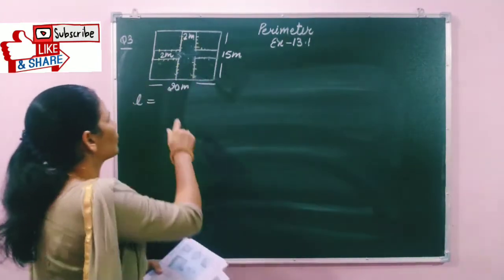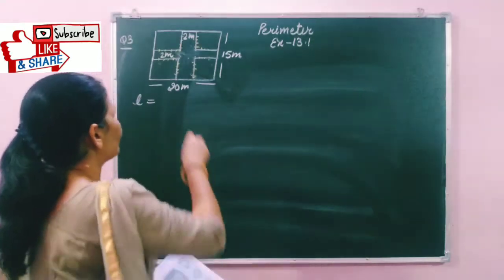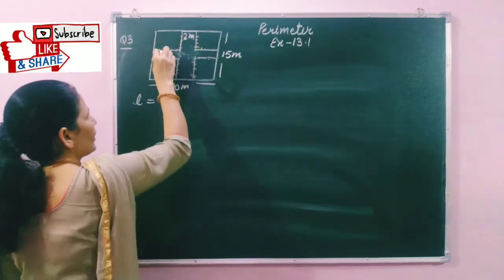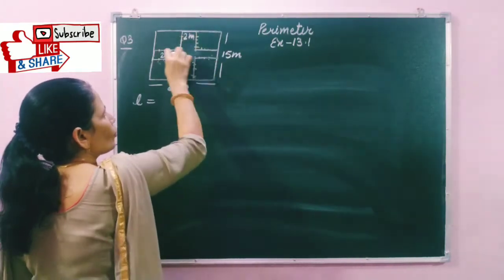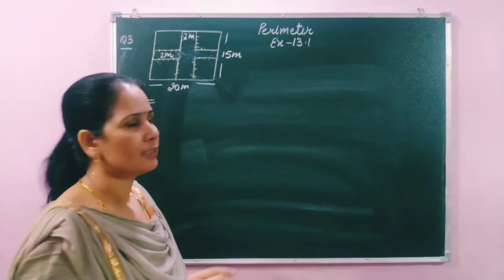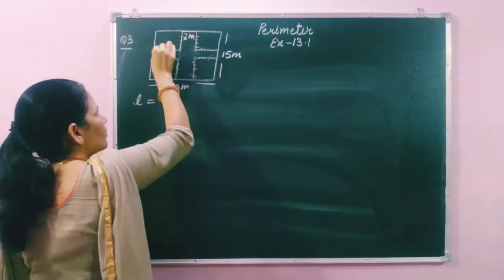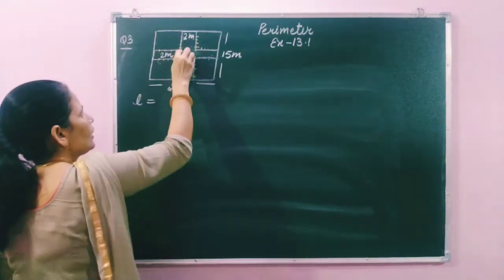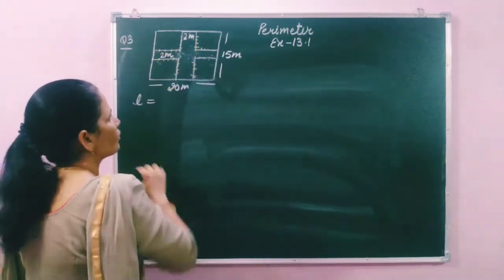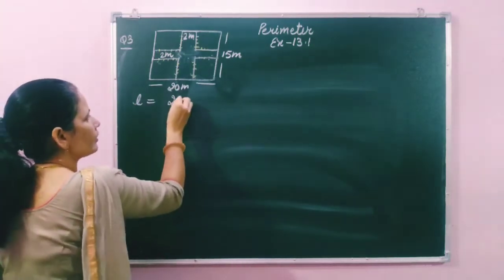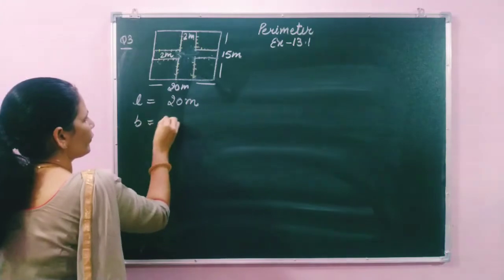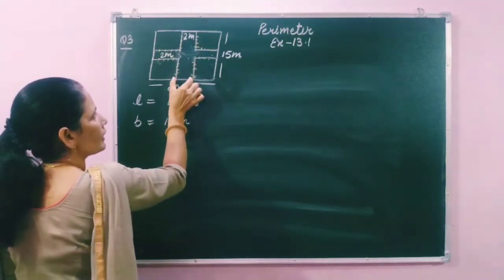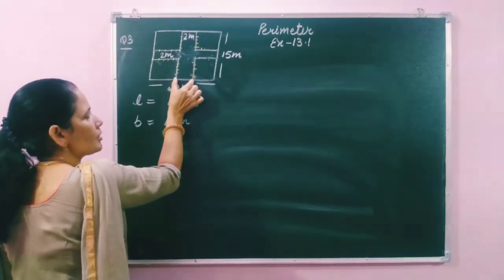We are going to solve question number 3. In this question they have given a rectangular path with two cross paths made inside it, and the border of this path is paved with stone. We have to find the total length of the stone path. The length is 20 meter, breadth is 15 meter, and the width of the path is 2 meter.